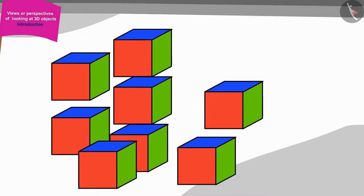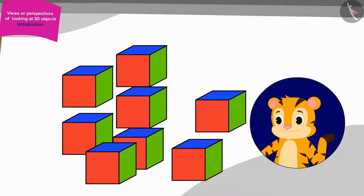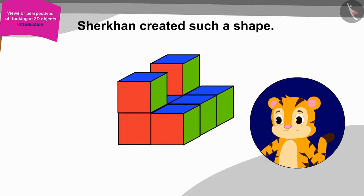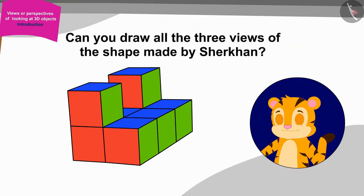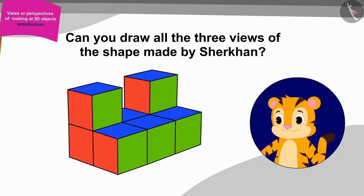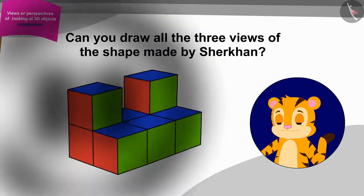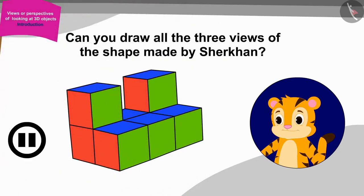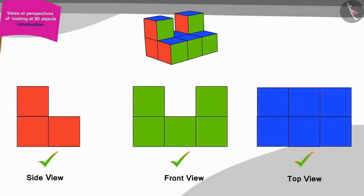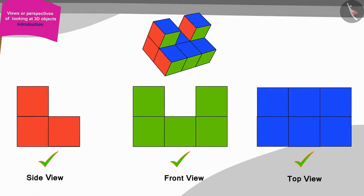Now, it was Sher Khan's turn to make shapes from the boxes. Sher Khan created such a shape. Can you draw all the three views of the shape made by Sher Khan? If you want, you can stop the video and find the answer. Well done, children. You have made a perfect picture.